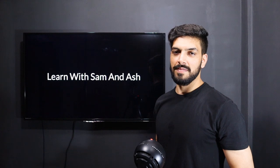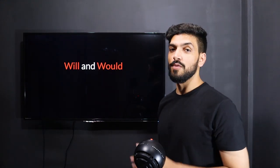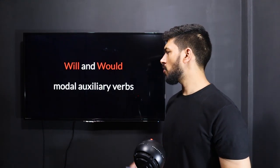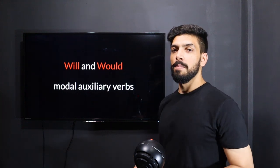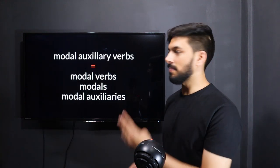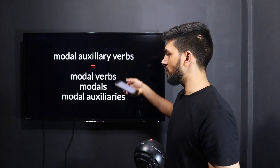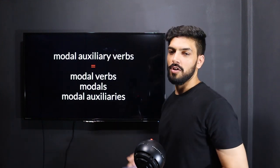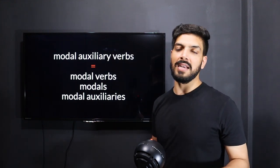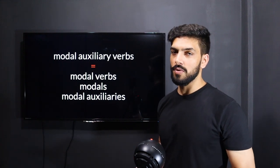Welcome to Learn with Sam and Ash. We're going to talk about will and would today, which are also called modal auxiliary verbs. Modal auxiliary verbs have four names: modal auxiliary verbs, modal verbs, modals, and modal auxiliaries. We repeat this in every video so that you get clear on what it is about.